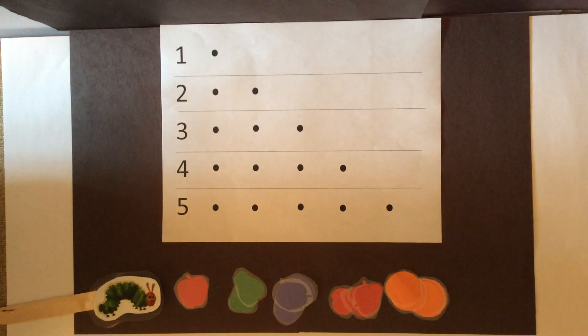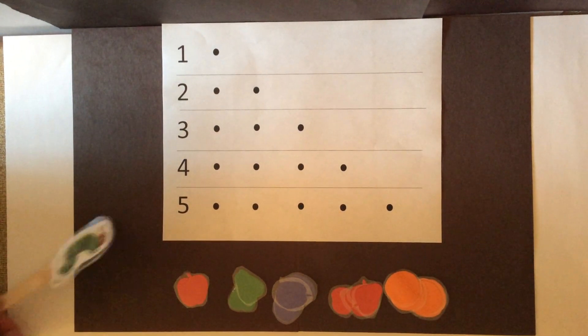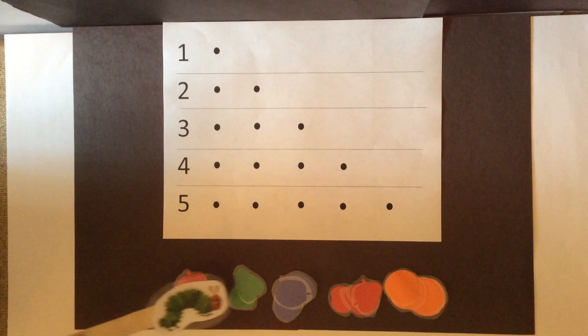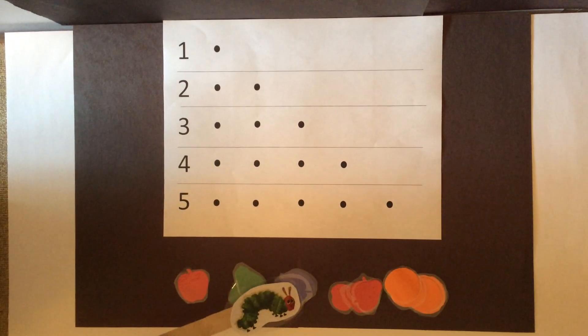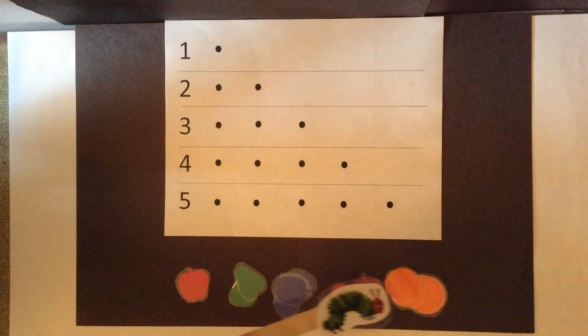First, sort your fruit shapes into piles of the same kind. Apples, pears, plums, strawberries, and oranges.